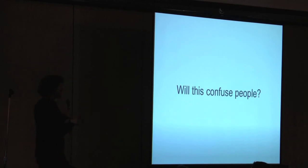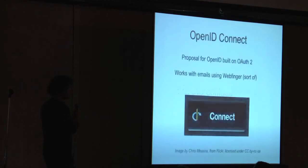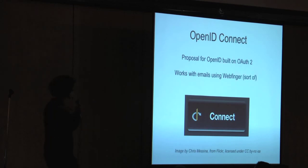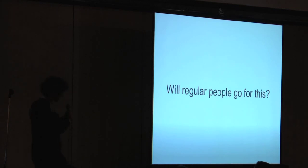Is this going to confuse people? There's a lot of debate, but I think it won't for two reasons. I've been really impressed with how people adapted to at-replies and hashtags — they saw an immediate use and picked it up just fine. I also think it's a UX problem that autocomplete can really solve. There's OpenID Connect — proposed just two weeks ago, not yet fully defined — which is a proposal for OpenID built on OAuth 2 that allows emails as identifiers instead of URLs, using WebFinger as the lookup without calling it WebFinger. Whether or not Diaspora falls flat on its face, you can see there's a desire for a decentralized web, a better social web, and WebFinger is one of the many pillars to make that happen.